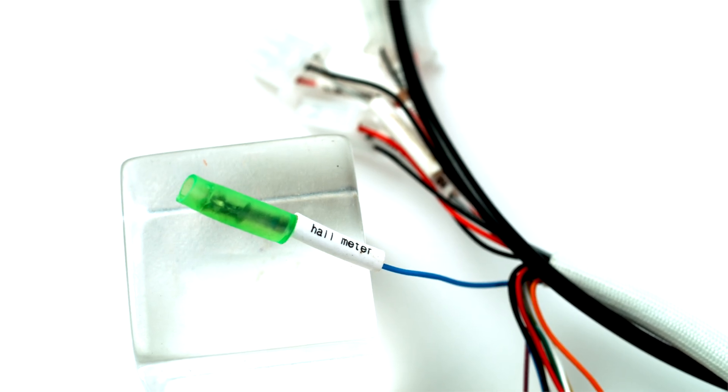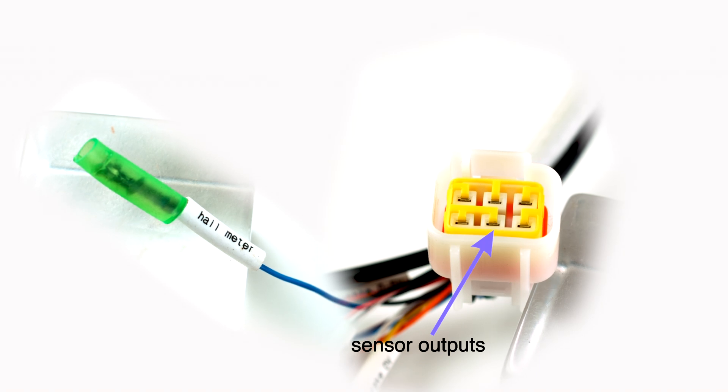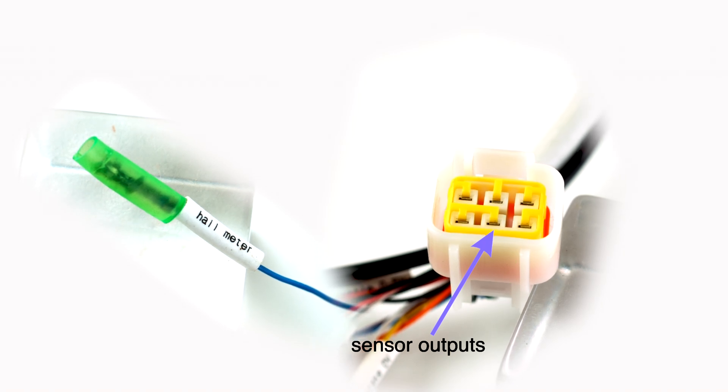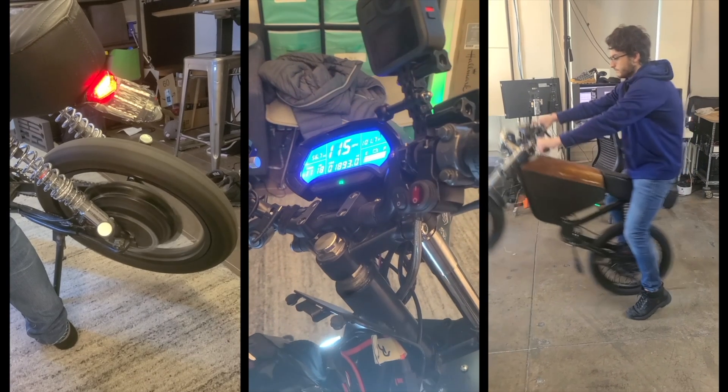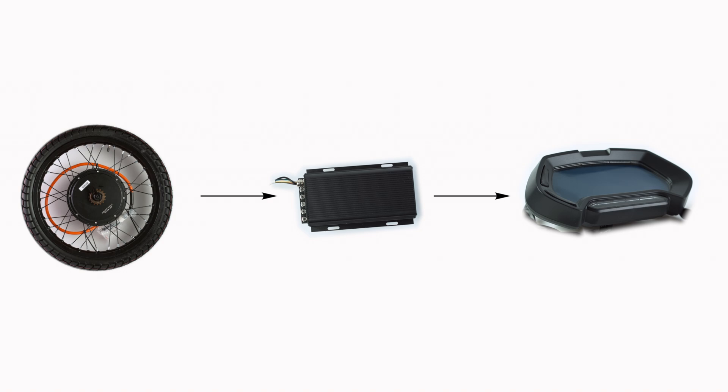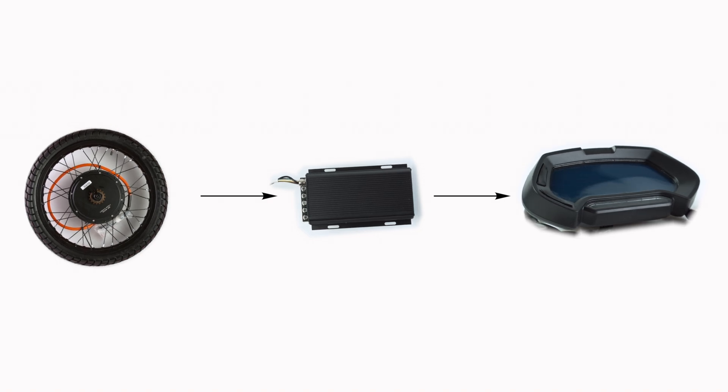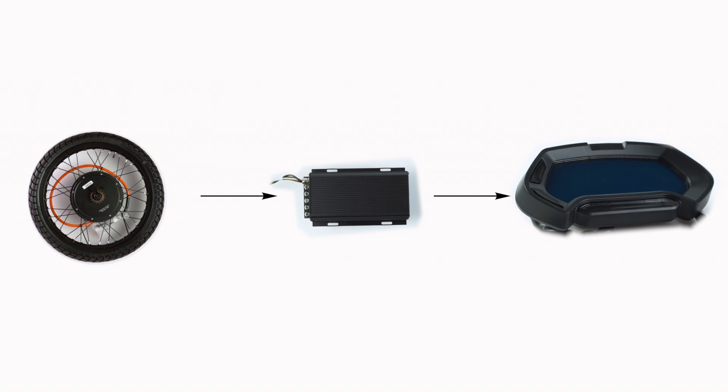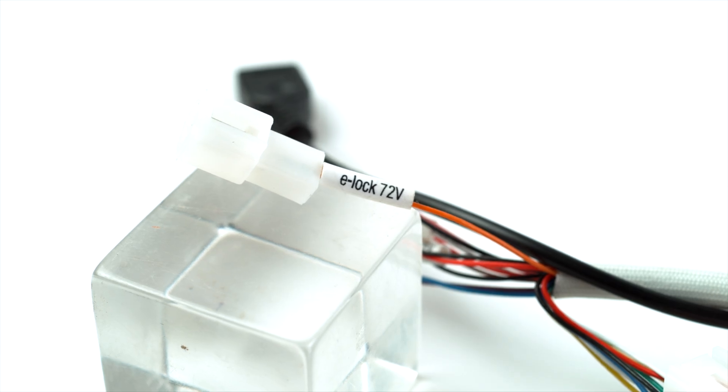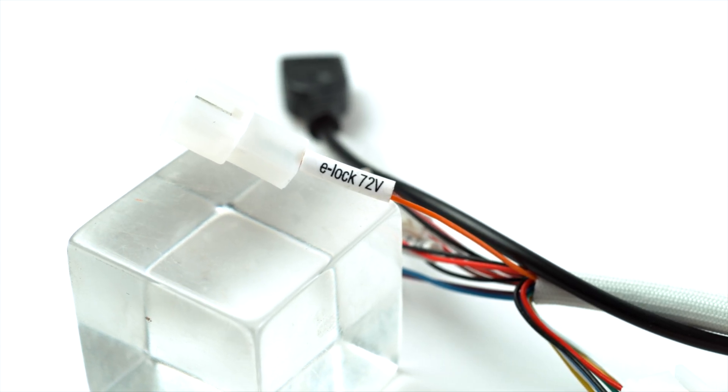Now this green wire here called hall meter is just a duplicate of one of the hall sensor wires. The reason it goes through the speed controller is to make our wiring neater. This will connect to our display and tell the display how fast the bike is going. Every time our motor spins the hall sensor will output a bunch of pulses to the speed controller and the speed controller will pass those through that wire to the display, and the display can then calculate how fast we're going based on how many pulses it's getting.